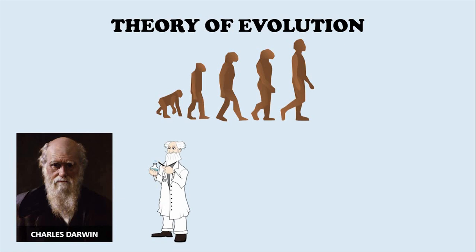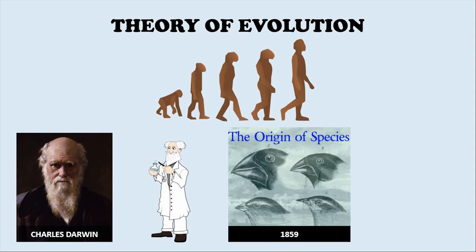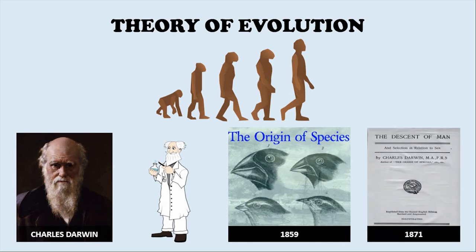His researches led to the publication of his path-breaking work, The Origin of Species. He fully developed his argument about human evolution in his later work, Descent of Man.